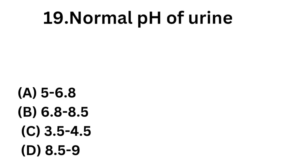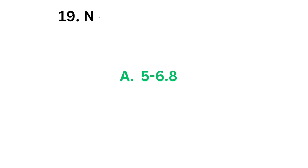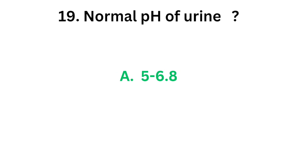Question number 19: Normal pH of urine. Option A: 5 to 6.8. Option B: 6.8 to 8.5. Option C: 3.5 to 4.5. Option D: 8.5 to 9. The correct answer is Option A: 5 to 6.8. Normal pH of urine is 5 to 6.8.